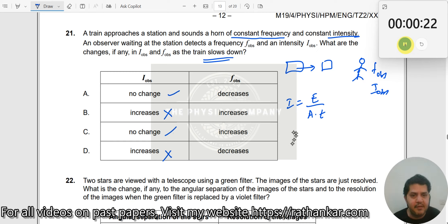Now, F observed. What is F observed? F observed is nothing but F into C divided by C minus V. So, when the train is approaching towards you, definitely your frequency should increase. But when you say as the train approaches, it is slowing down. Which means what?